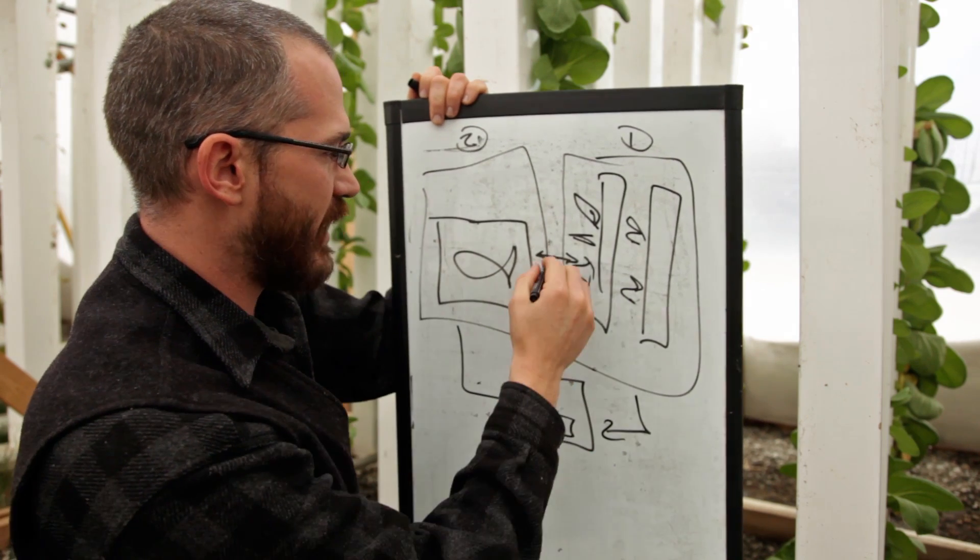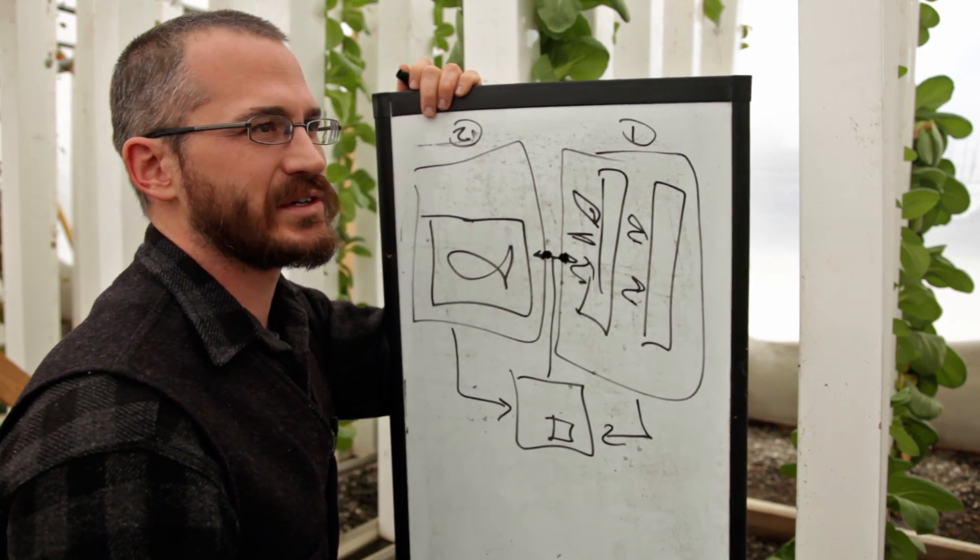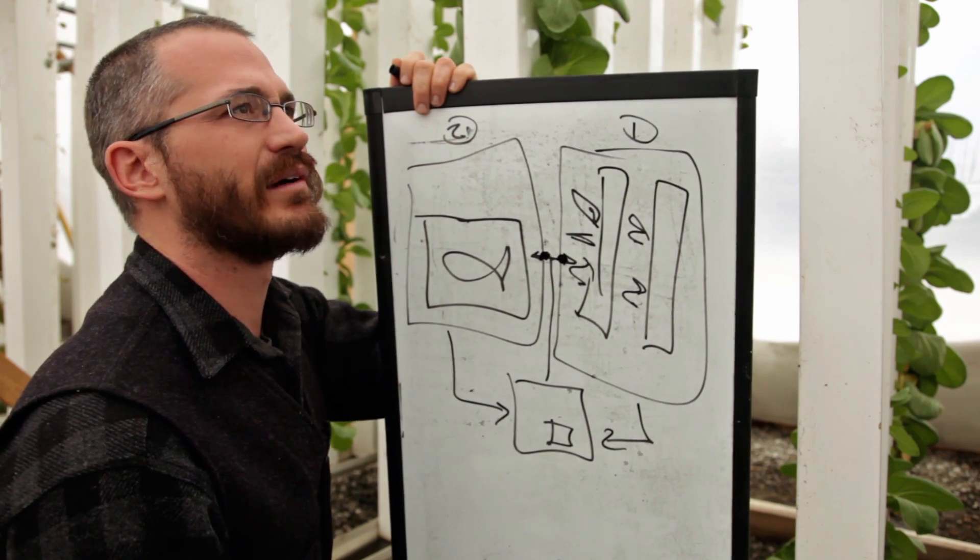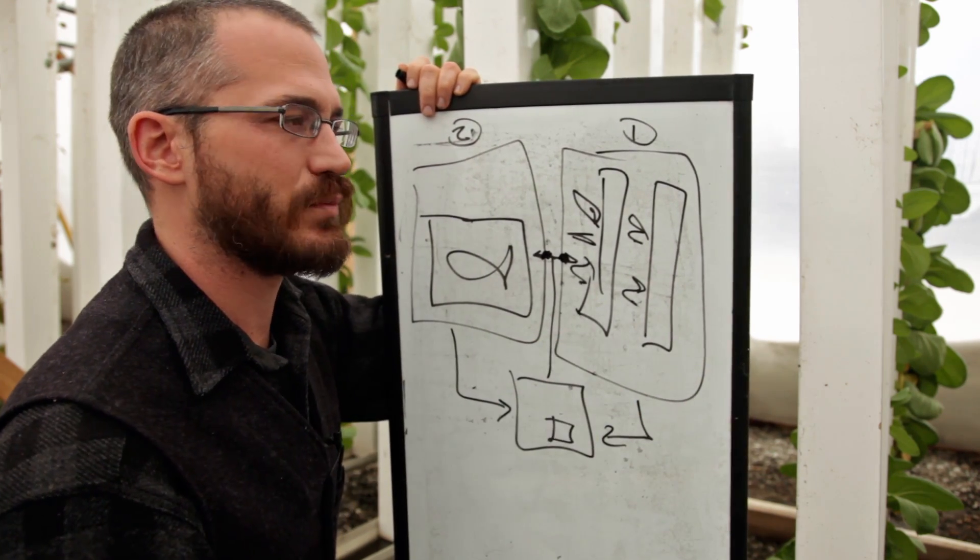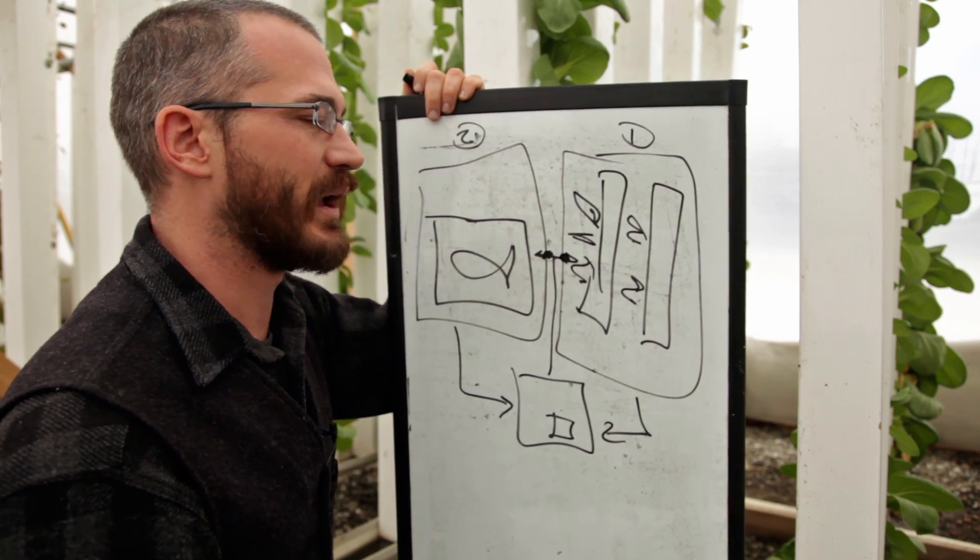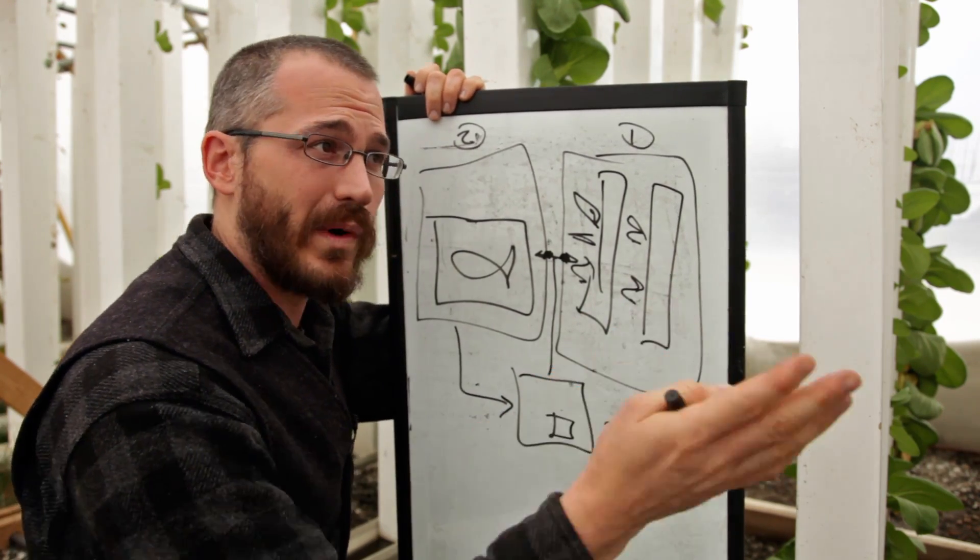So the way we have it set up is we've got valves here and here. So say on an exceedingly cold night, 50 degrees below zero, and we're worried about maintaining temperatures in here for our plants while simultaneously maintaining the temperature of our water for our fish, we can turn off the water to our plants overnight.